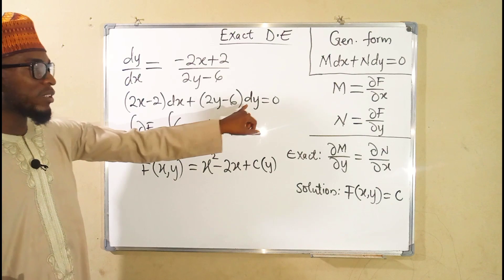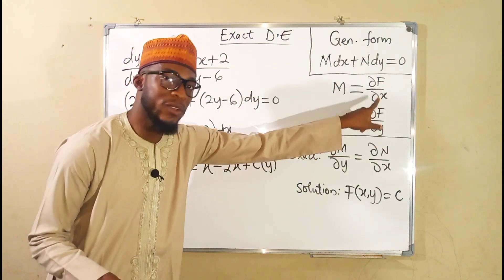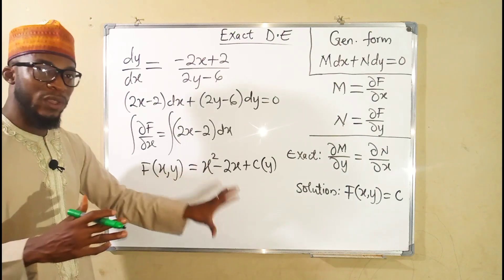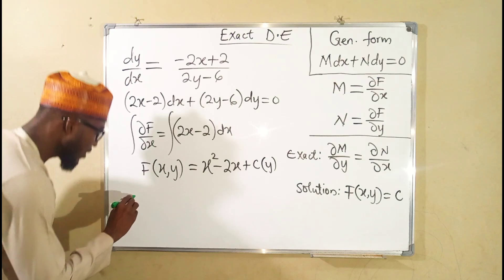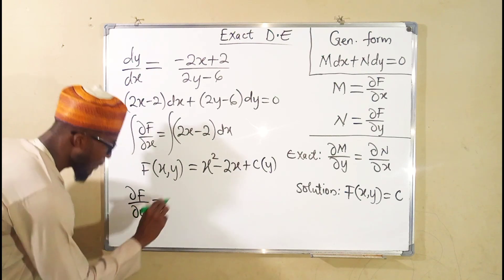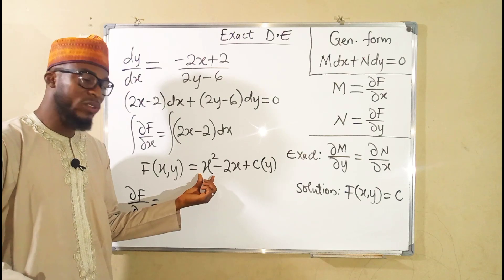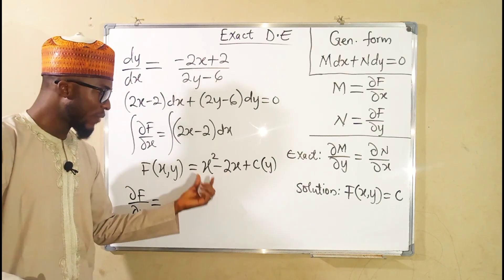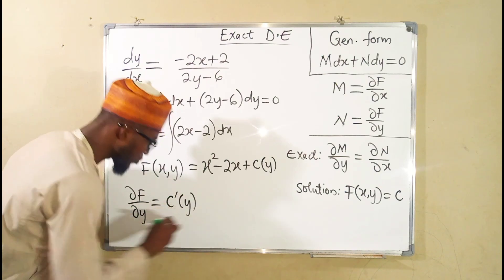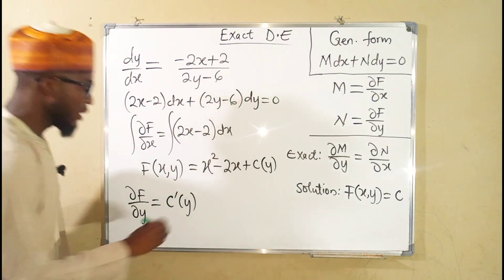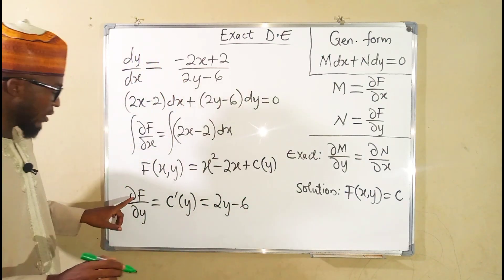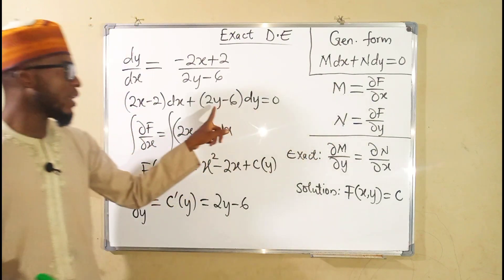Remember, the term connected to dy is N, and N is the partial derivative of f with respect to y. So we differentiate our expression for f with respect to y. The x squared and 2x terms are treated as constants, giving zero, leaving only c prime of y. This c prime of y must equal 2y minus 6, because the partial derivative of f with respect to y is N, and our N is 2y minus 6.